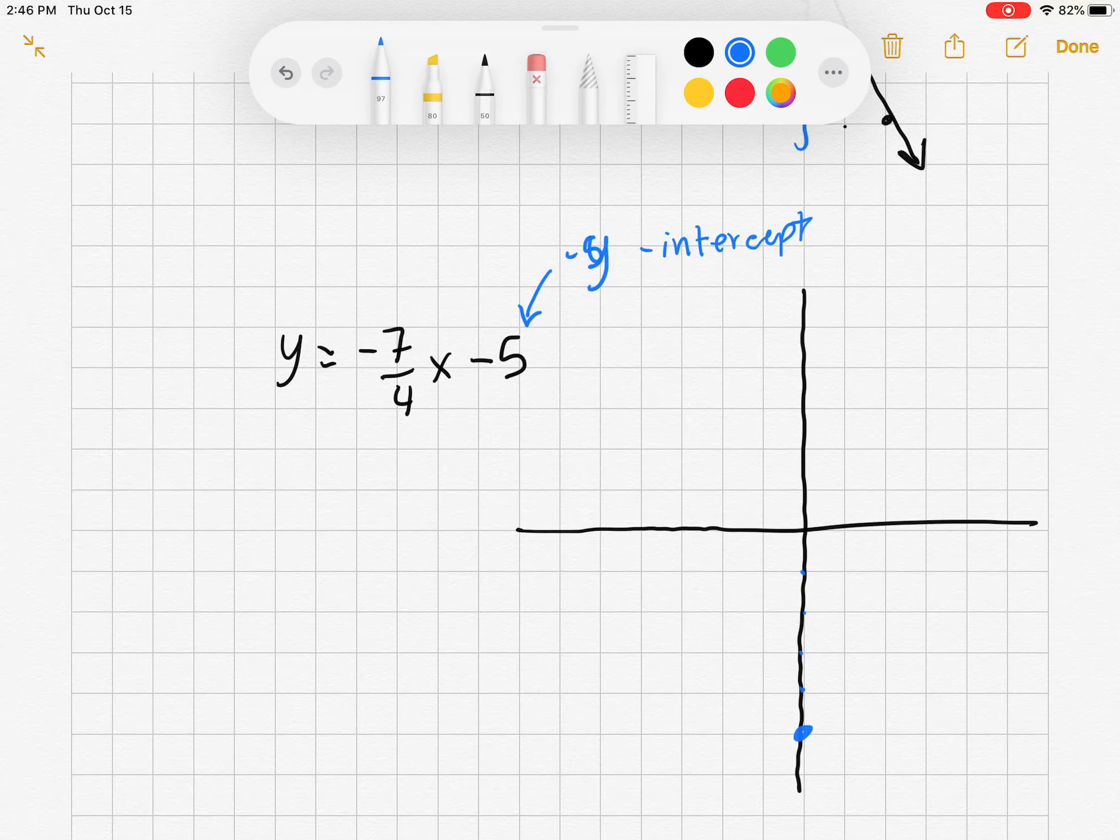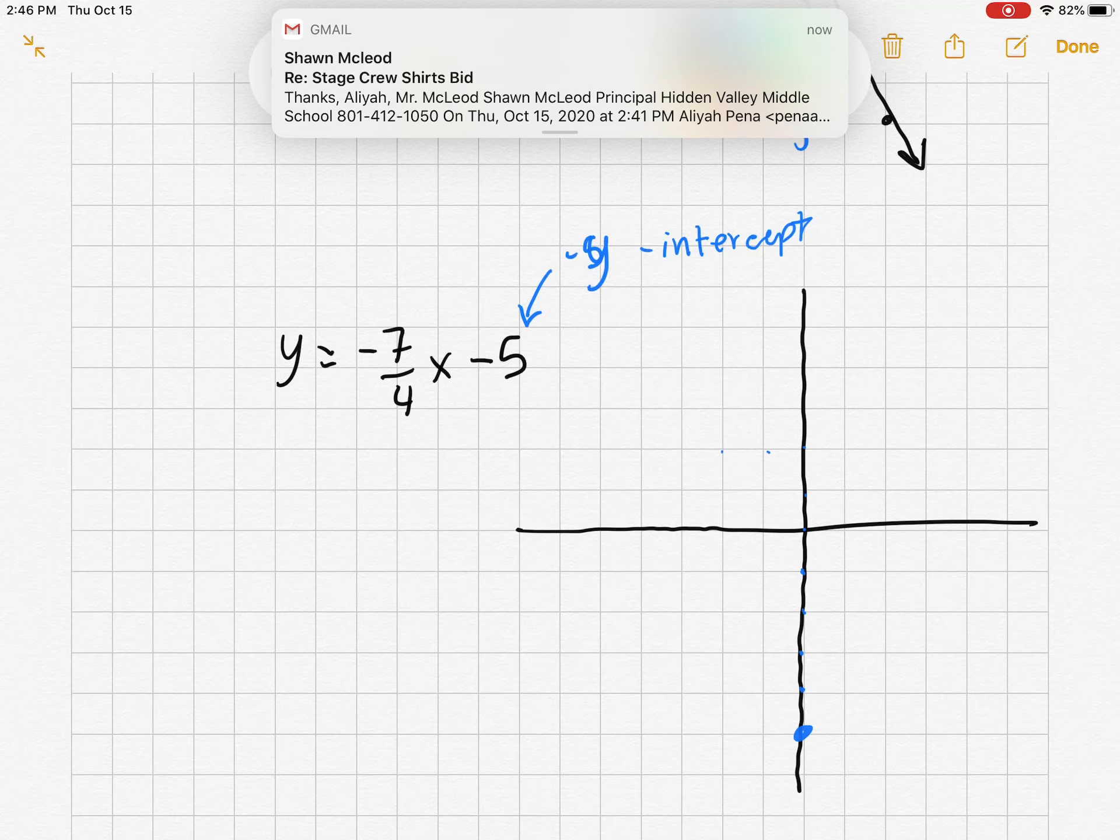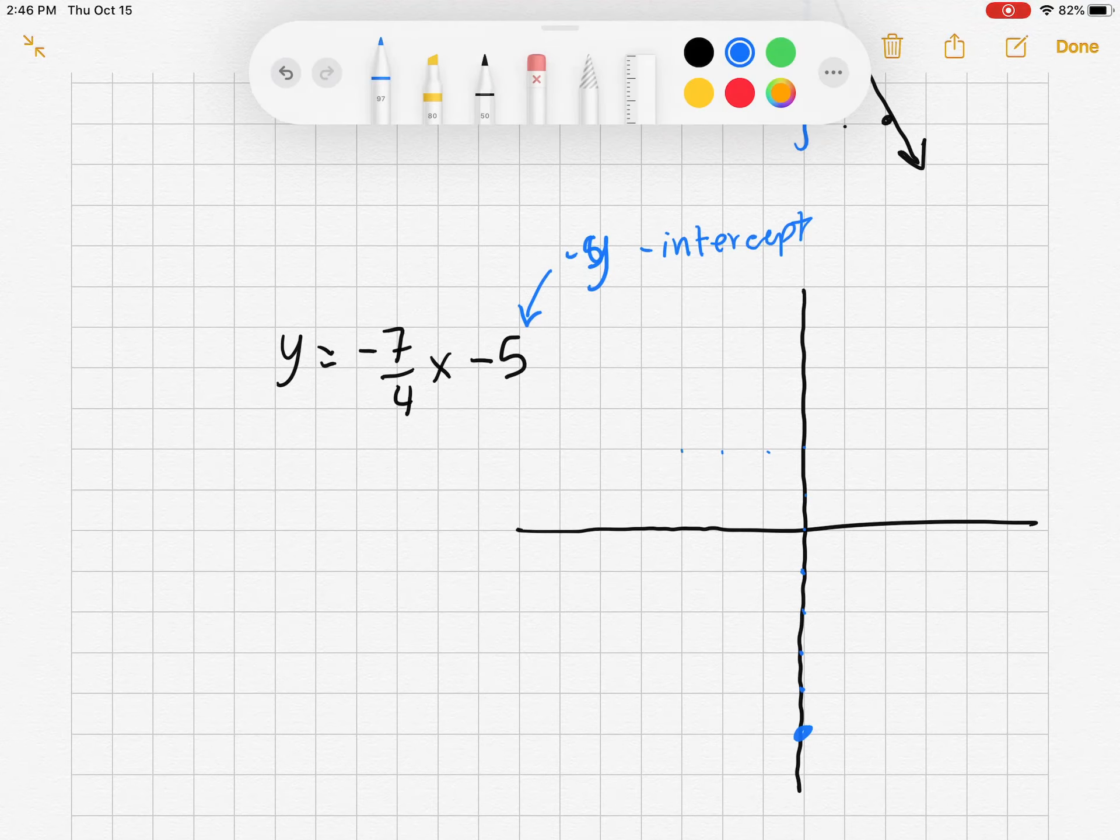5, 6, 7. And over negative 4. Puts us right there. We have our two points. That's enough to make a line. There we go.